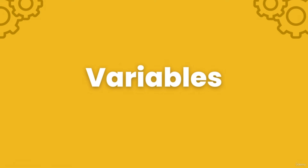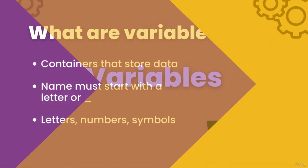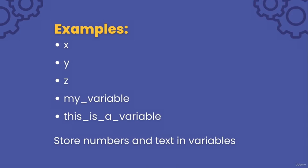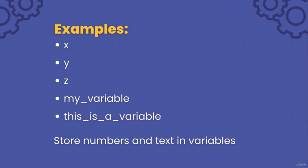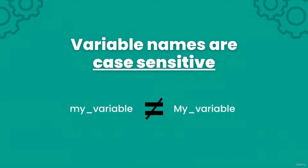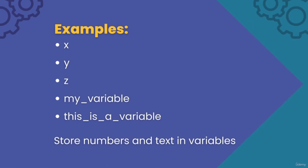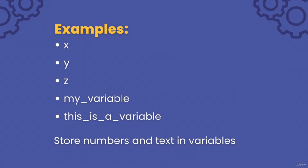Hey guys, welcome to your second unit where you're going to learn about variables. Variables are like containers for storing data. The names of variables must start with either a letter or an underscore, and can be any combination of letters, numbers, and underscores. Here are some examples of variable names: x, y, z, my_variable, and this_is_a_variable. Variable names are case sensitive — for example, my_variable is a completely different variable than My_variable where the M is capital.